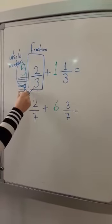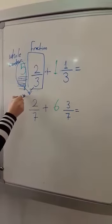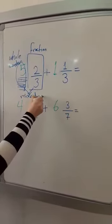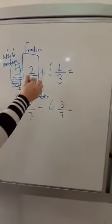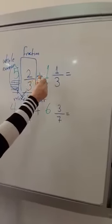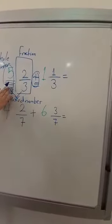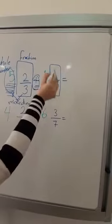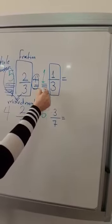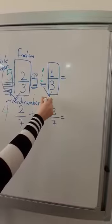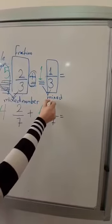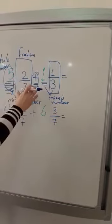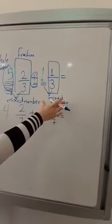So we can call it a mixed number. This sign here is plus. Mixed number plus another mixed number. We have a fraction and we have a whole number, so we can say mixed number.